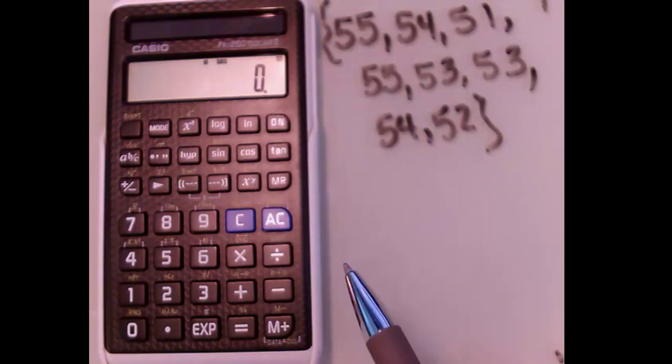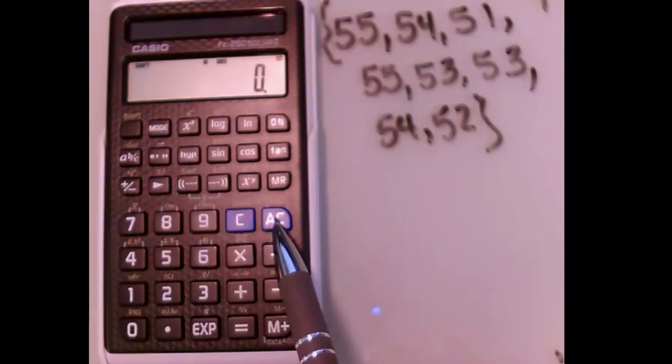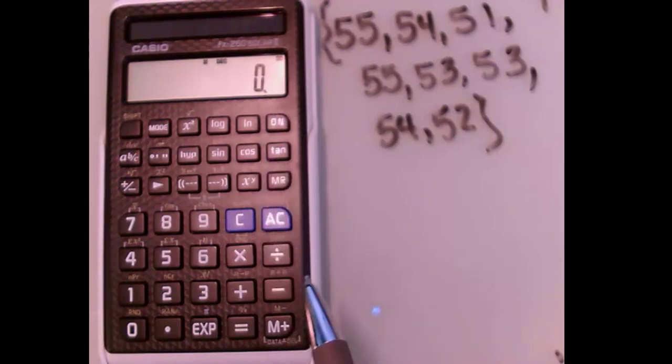So basically to tell the calculator I want to start, I want to hit this first. So I'm going to hit shift and AC, which really is the yellow that I'm doing up here, SAT, statistical. And now I can start entering the numbers in this list, this data.